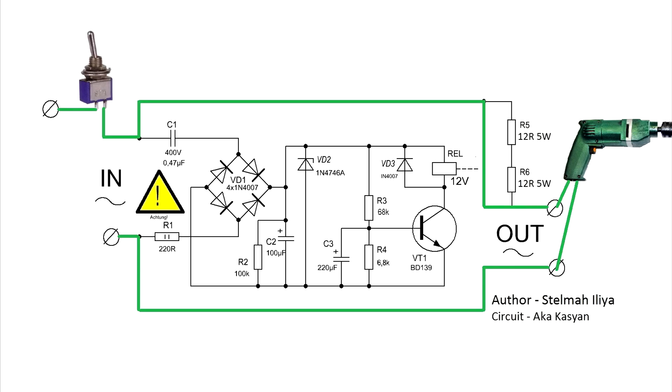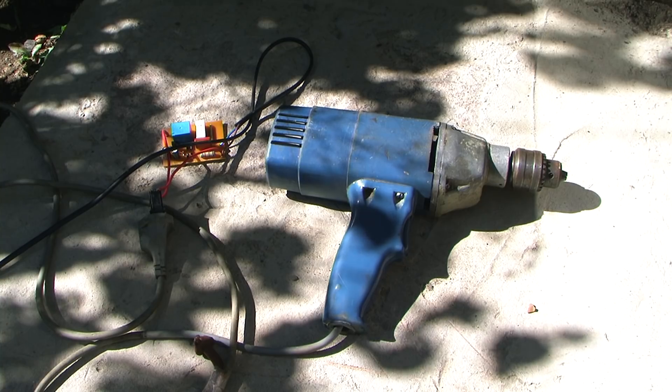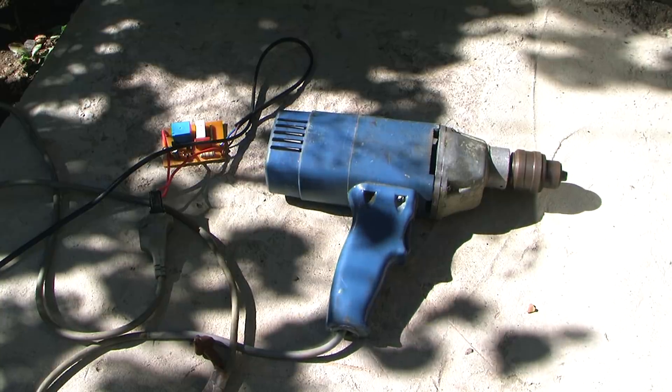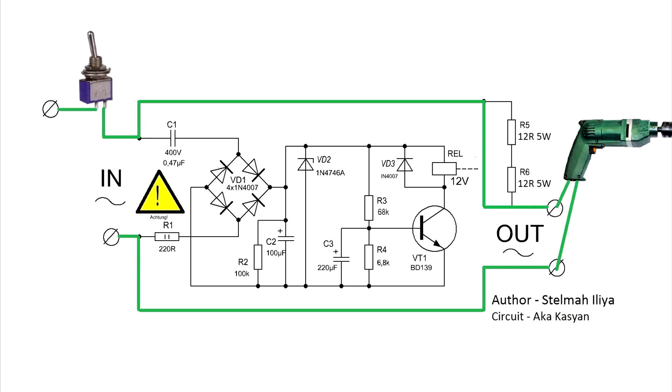the delay system is triggered and the relay contacts close. Now the power to the load goes through the relay contacts, bypassing the resistors. By that time, our drill was already working, though it wasn't spinning at full speed. And now, after the relay is activated, it receives full voltage from the mains.